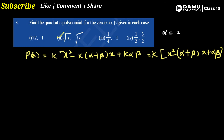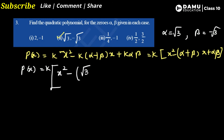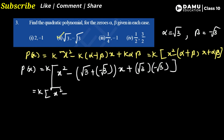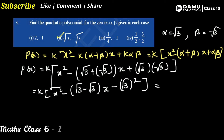Let us substitute the values. Alpha equals root 3 and beta equals minus root 3. Substituting into k times x squared minus (root 3 plus minus root 3) times x plus root 3 times minus root 3 equals 0. Root 3 minus root 3 cancels to 0, and root 3 times minus root 3 equals minus 3. So we get k times x squared minus 0 times x minus 3.